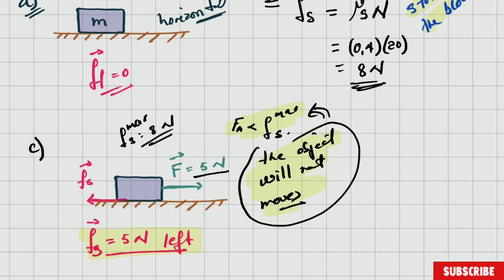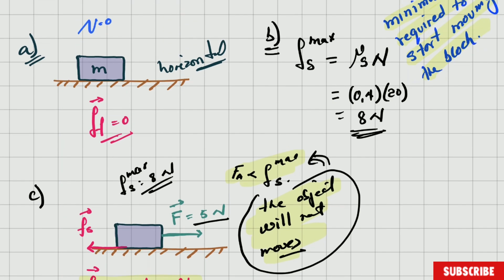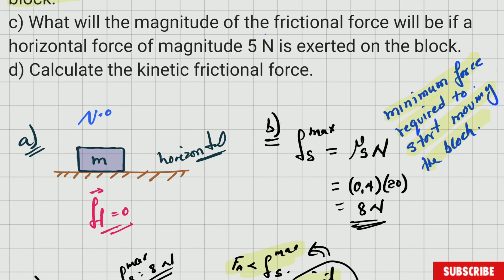If this force suddenly increased to 7 Newtons — 7 is still less than 8 — so the frictional force will be 7 Newtons of static frictional force. You always need to calculate the maximum static frictional force first; this is practically the end of that part of the question.